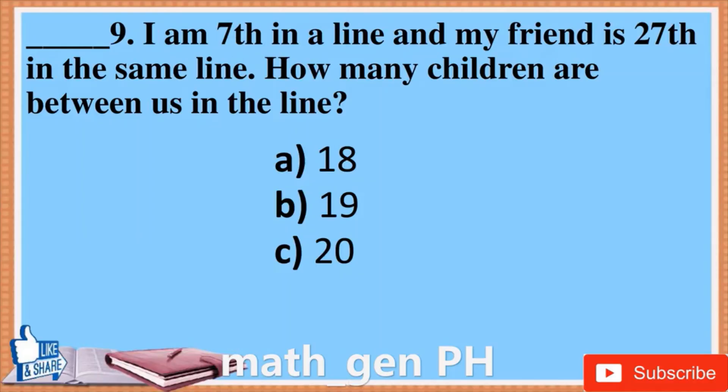Question 9: I am 7th in a line and my friend is 27th in the same line. How many children are between us in the line? A. 18, B. 19, C. 20.